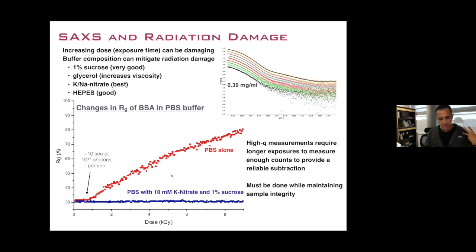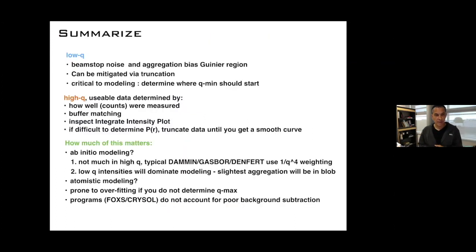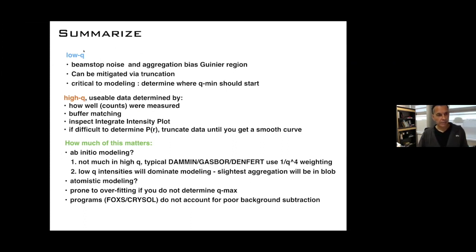When you do SAXS and see that your sample is sensitive to radiation damage, think about increasing the buffer concentration — if it's Tris, maybe go to 100 mM Tris — or add an additive like sucrose to help deal with that.